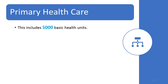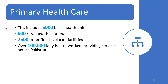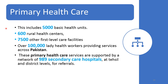Primary health care in Pakistan includes 5,000 basic health units, 600 rural health centers, 75,000 other first-level care facilities, and over 1,000,000 lady health workers providing home-to-home care. These primary health care centers are all connected to 989 secondary care hospitals, where patients with complicated cases can be referred. Referrals go to secondary care at the facility or district level headquarters.